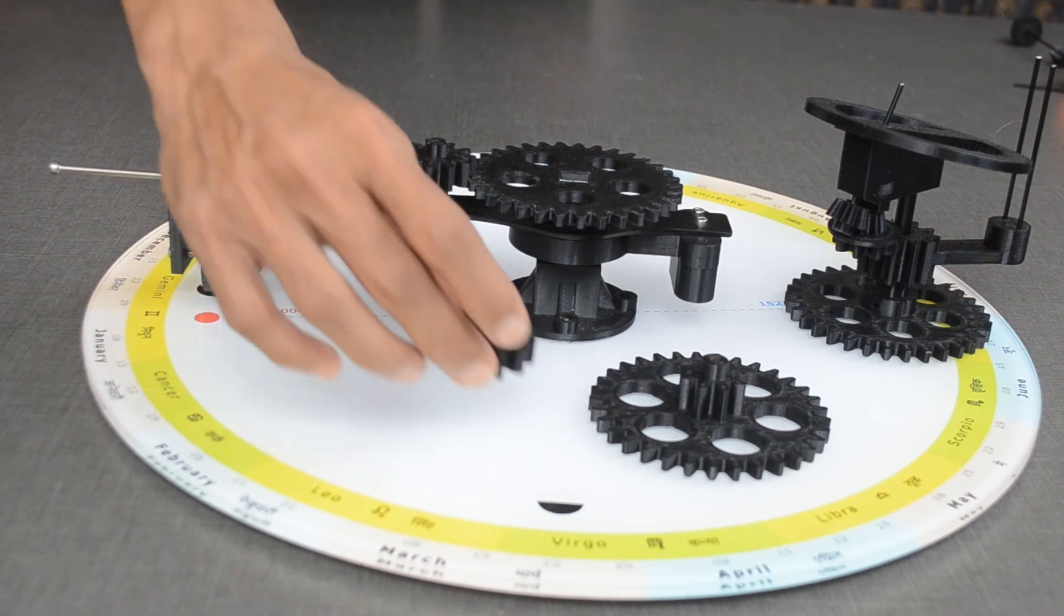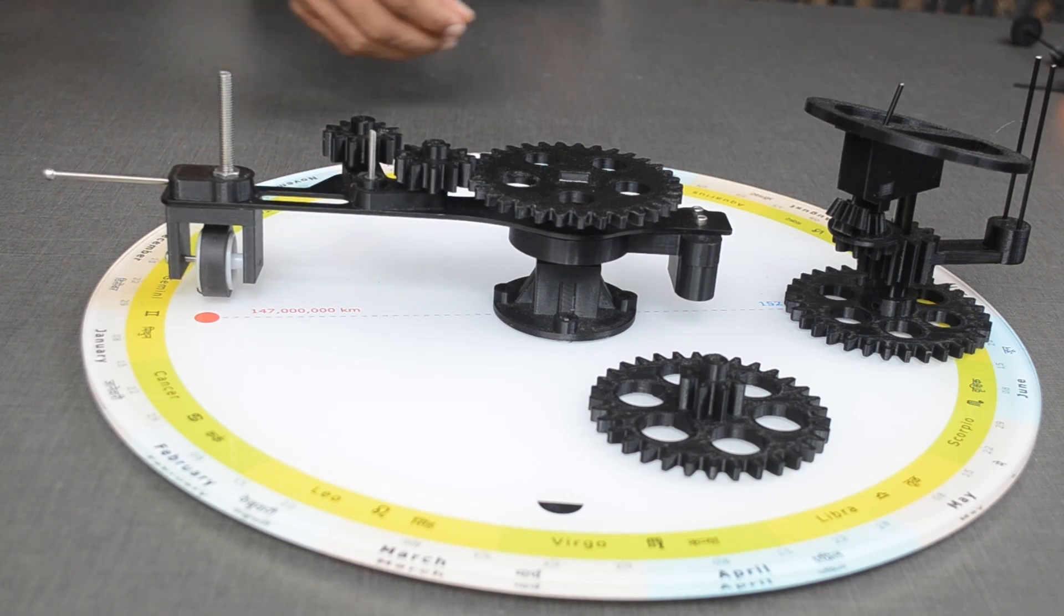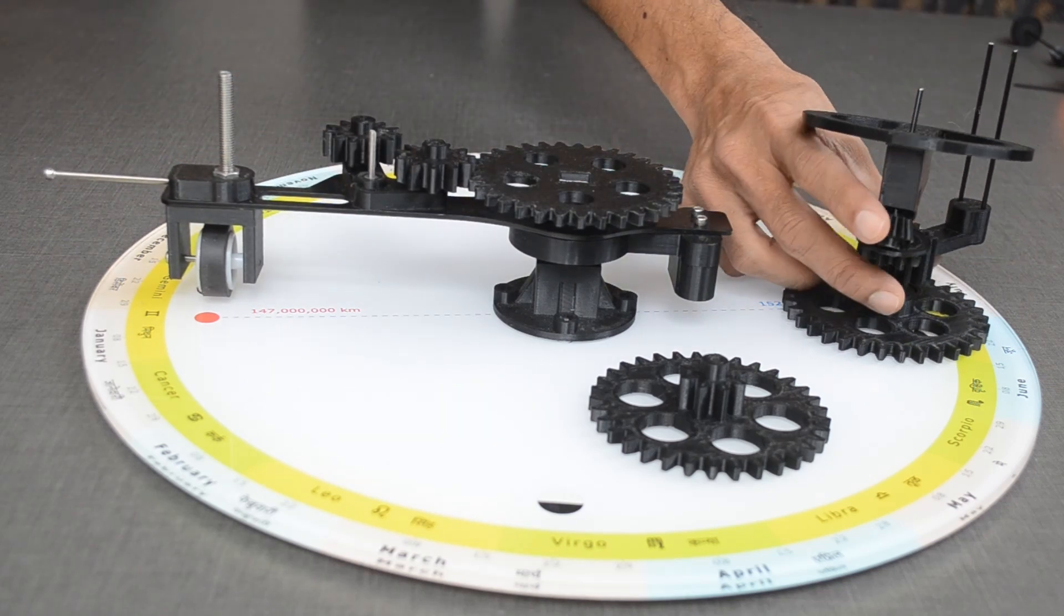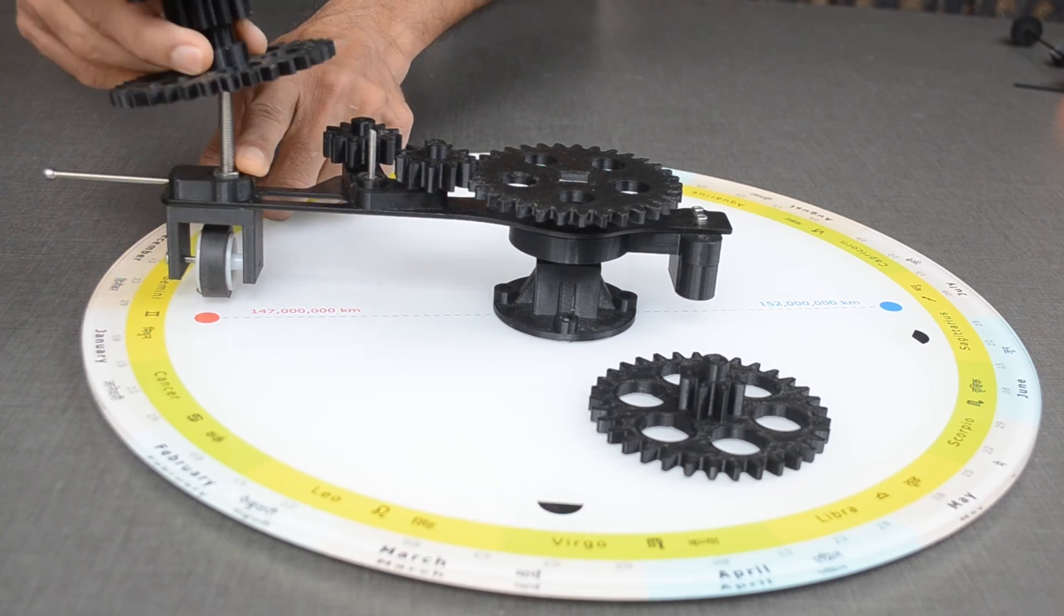Two small gears and one large compound gear is used to ensure proper ratios of rotation and revolution. This small unit will house the Earth and the Moon together.